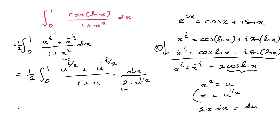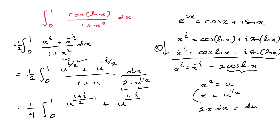We have dx equals du over 2 times x, which is u to the 1/2. Simplifying the factors, we get 1 over 4 times the integral from 0 to 1 of u to the power (1 plus i)/2 minus 1 plus u to the power (1 minus i)/2 minus 1, all over 1 plus u, du.